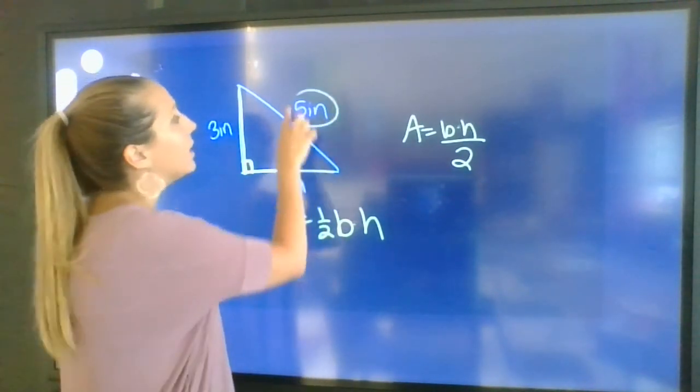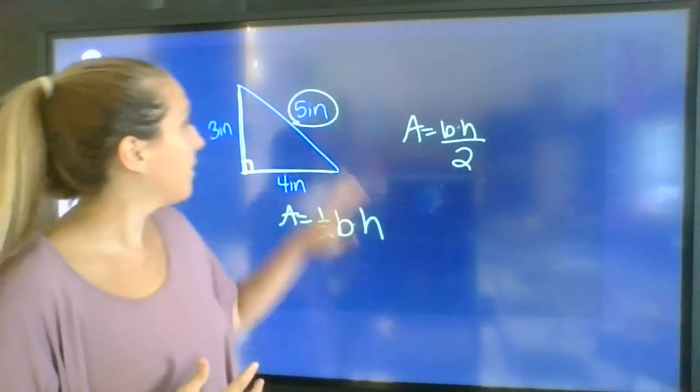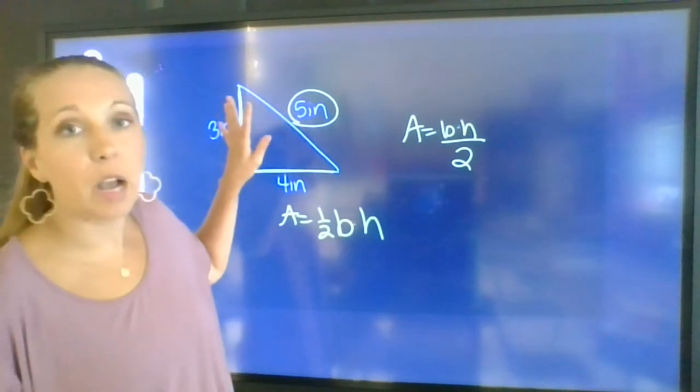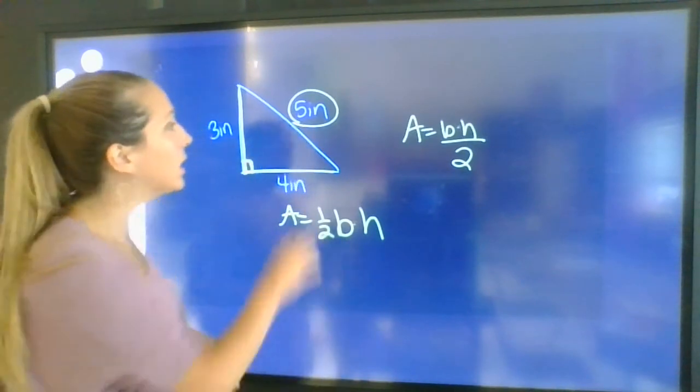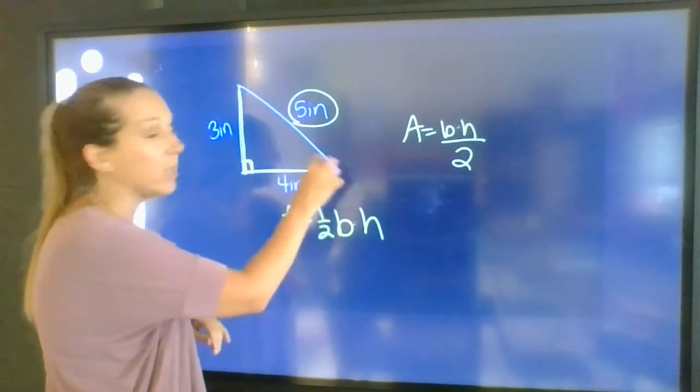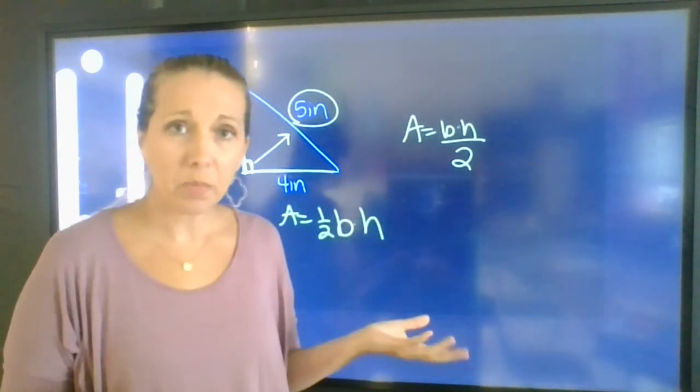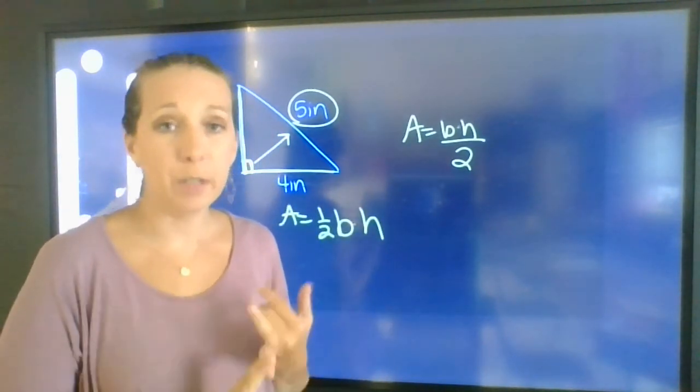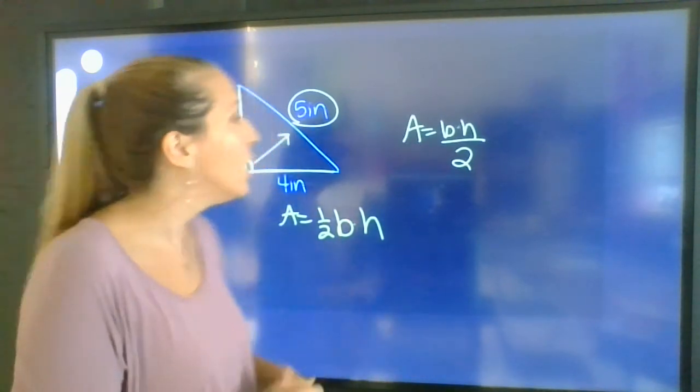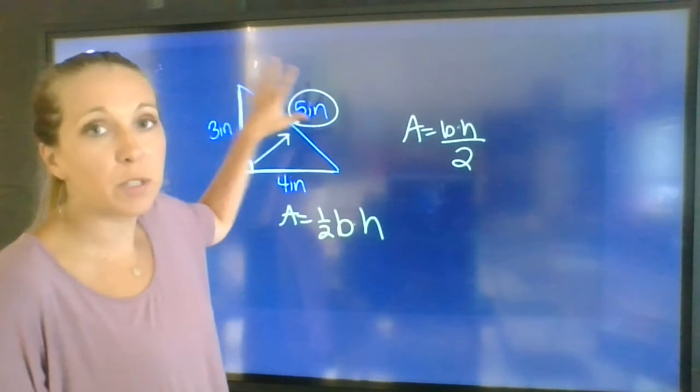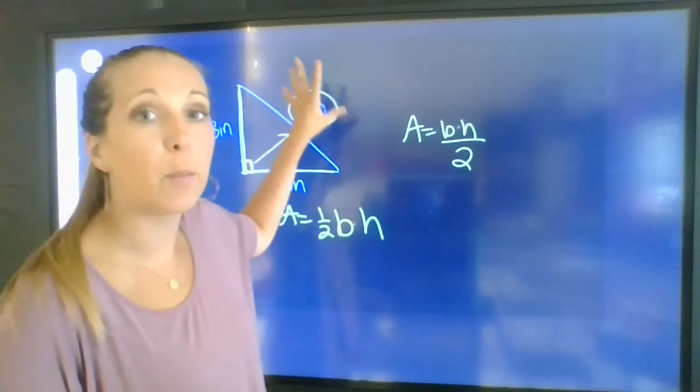This 5 inch, it's going to be given a lot of times just to see if you know what you're using. The 5 would be great if we're finding perimeter. But since we're finding area, we only need base and we only need height. This is what we call a hypotenuse – it is across from the right angle. It's something you will use later when you're dealing with different types of triangles and when you start doing some formulas to find different sides of triangles. So for 6th grade purposes, we do not need the hypotenuse unless we're using it for perimeter.